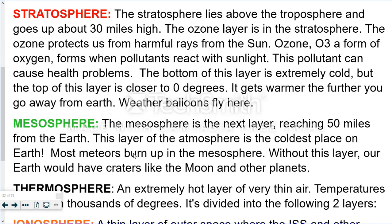The next layer up is the mesosphere. And this is the coldest place on Earth. When meteors fall out of the sky and travel through the mesosphere, they burn up. Without this layer, then the meteorites would hit the Earth and we would look like the Moon.